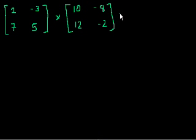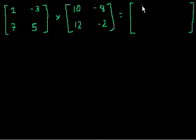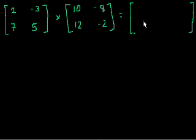Now there might be a strong temptation — and in some ways it's not even an illegitimate temptation — to do the same thing with multiplication that we did with addition: to just multiply the corresponding terms. So you might be tempted to say the first term, the 1,1 term, is going to be 2 times 10, and this term is going to be minus 3 times minus 8, and so forth. That's how we added matrices, so maybe it's a natural extension to multiply matrices the same way. And that's legitimate — one could define it that way — but that's not the way it is in the real world. The way in the real world is more complex, but if you look at a bunch of examples, I think you'll get it and you'll learn that it's actually fairly straightforward.